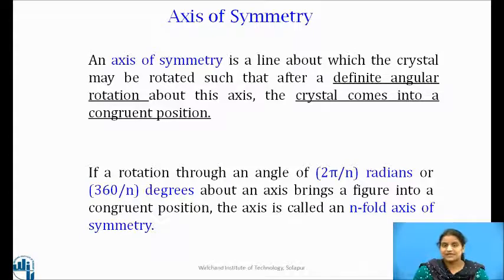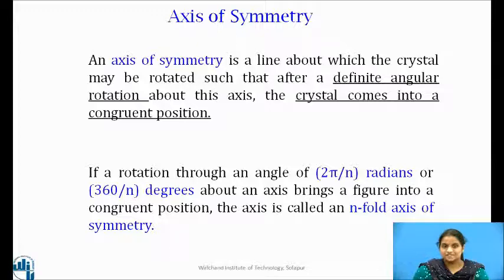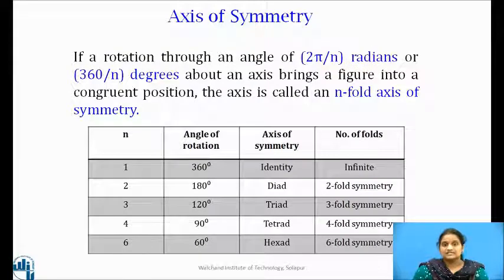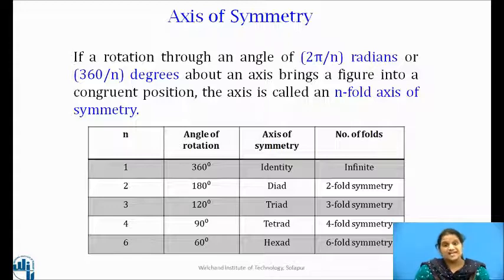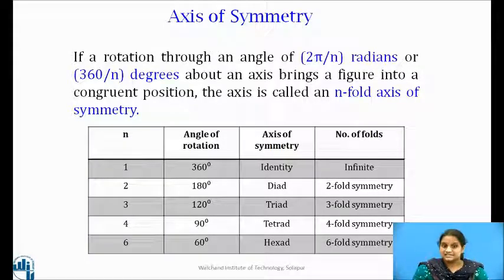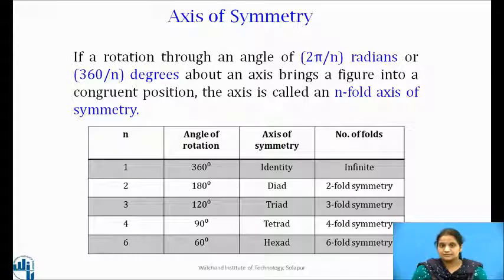In general, if a rotation through an angle of 2π/n radians or 360/n degrees about an axis brings a figure into a congruent position, the axis is called an n-fold axis of symmetry. For n = 1, the crystal is rotated through 360 degrees to achieve self-coincidence and the axis is known as the identity axis. Each crystal possesses an infinite number of such axes.